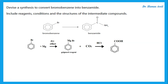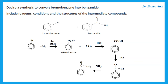To change the benzoic acid into an amide, we have several methods. We can make the acyl chloride by reacting it with phosphorus pentachloride, and then add ammonia to the acyl chloride to get the required benzamide product.